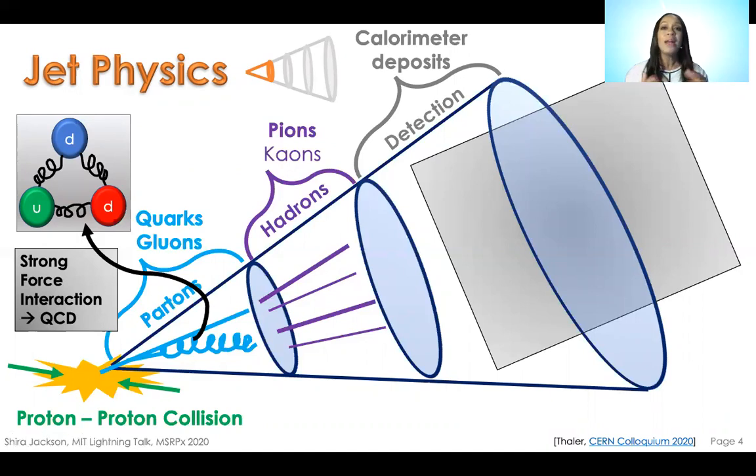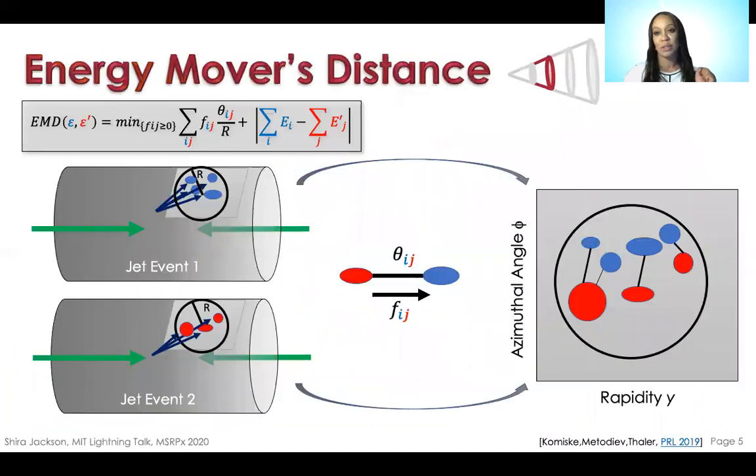One analysis strategy we can employ is using this novel metric known as the energy movers distance or EMD. My collaborators previously defined this EMD which characterizes the distance between two events or two jets.